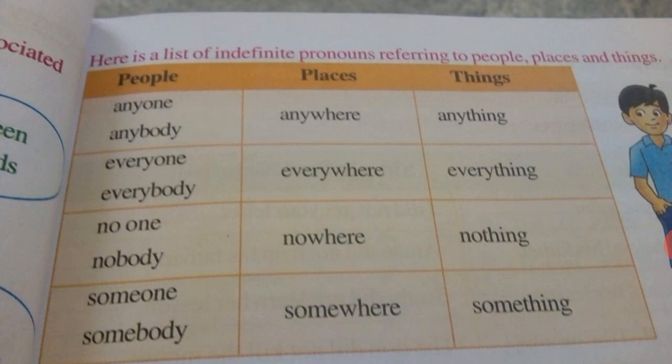Continuing the table: everyone, everybody — for example, 'everyone from this class should write the assignment.' Everywhere, everything. No one, nobody. Nowhere, nothing. Someone, somebody. Somewhere, something. Learn this complete table of indefinite pronouns.